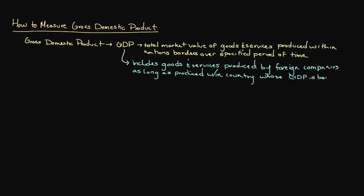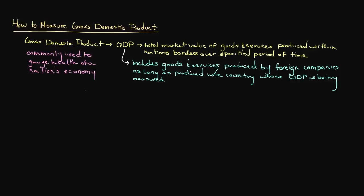To really make sense of GDP, we need to know what it includes. The basic formula for determining a nation's gross domestic product is C + G + I + NX. Each of these variables represents a different source of spending.